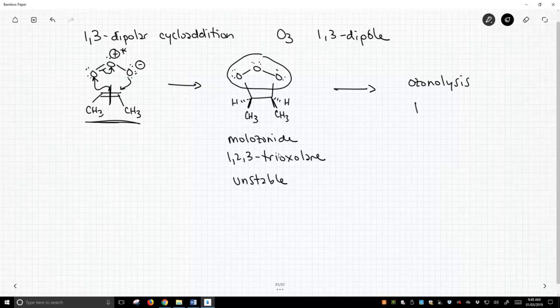And the identity of those products is determined by what we use to work up our ozonolysis. Was it an oxidative workup or a reductive workup? But this thing, this intermediate ring, is unstable.